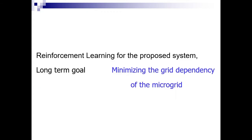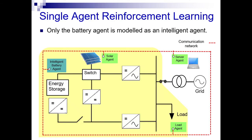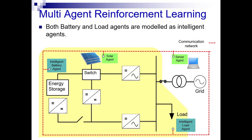The optimization problem to apply reinforcement learning is the minimization of grid dependency of the microgrid in the long run. There are two approaches for reinforcement learning application. In single agent reinforcement learning, intelligent decision-making ability is introduced to a single agent in the system. In multi-agent reinforcement learning, several agents can be advanced by introducing intelligence.